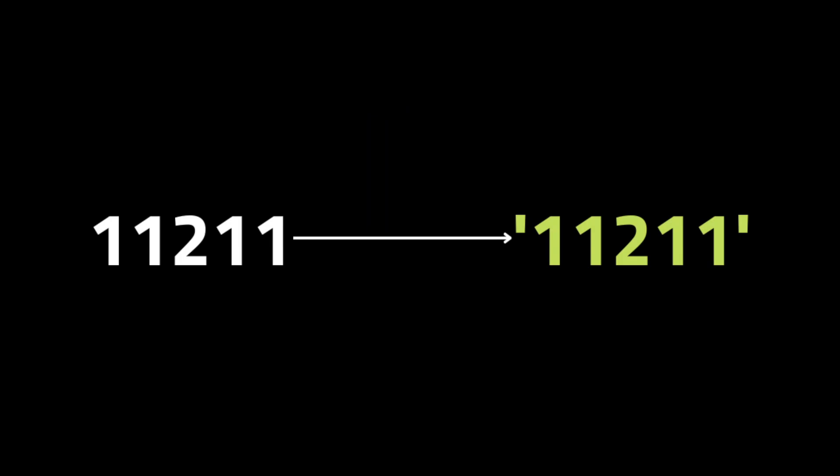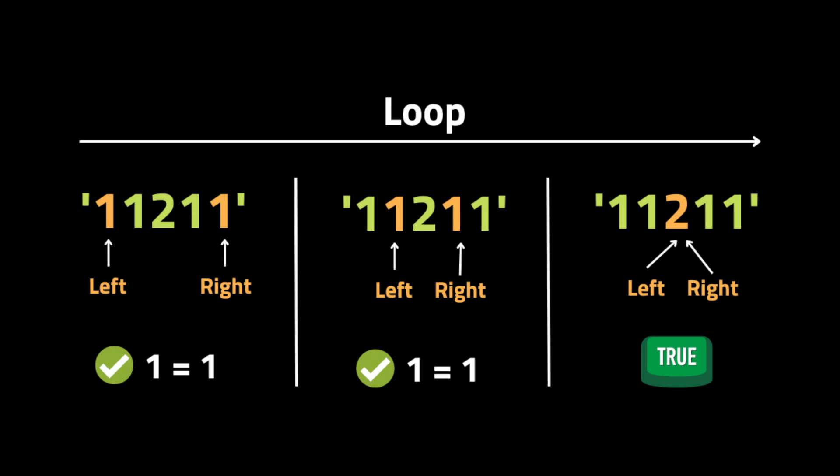Let's say we have this input integer. The first thing we're going to do is convert the integer to a string so that we can compare the characters, because it's impossible to compare the digits of an integer directly. That's why we need to convert the integer to a string, or we can use arithmetic operations, which I'm going to show you in the second part of the video.